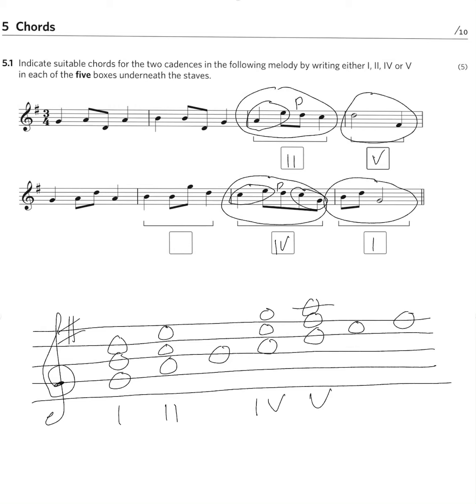So we write 4 in there. Now, let's look at the bar before that. We have B, another B moving by leap to G, which then moved by leap to D. So again, we have three notes, which must all be chord notes. And there is only one chord out of the four possible answers, which contains all those three notes. It is chord 1. So we are writing 1 in the box.